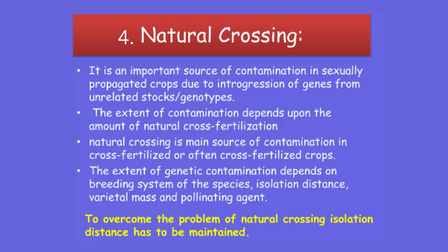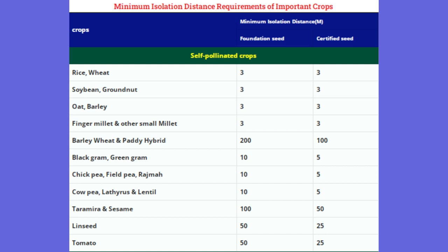Isolation distance is important for GRF, SRF, and all competitive examinations. Here you can see the minimum isolation distance requirements for important crops. There are two categories: isolation distance for foundation seed and for certified seed. For rice, wheat, soybean, groundnut, oat, barley, pearl millet, and other millets, the isolation distance for both categories is three meters. For tomato, the isolation distance is 50 meters for foundation seed and 25 meters for certified seed. For onion, it is 1,000 meters for foundation seed and 400 meters for certified seed.